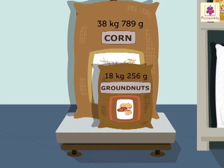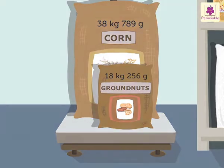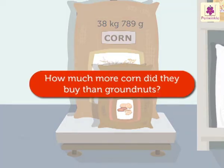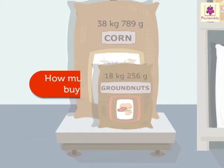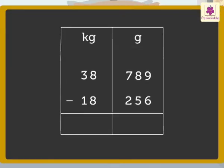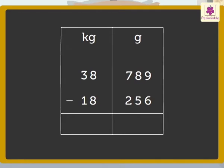Can you tell me how much more corn did we buy than ground nuts? To get the answer, we need to subtract the numbers. We should subtract the grams from the grams and the kilograms from the kilograms like this.